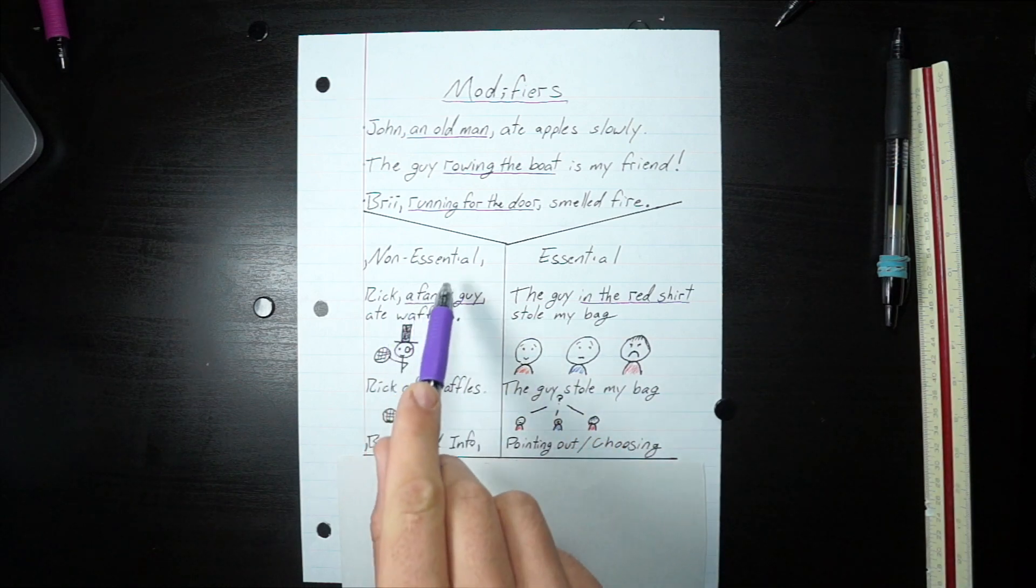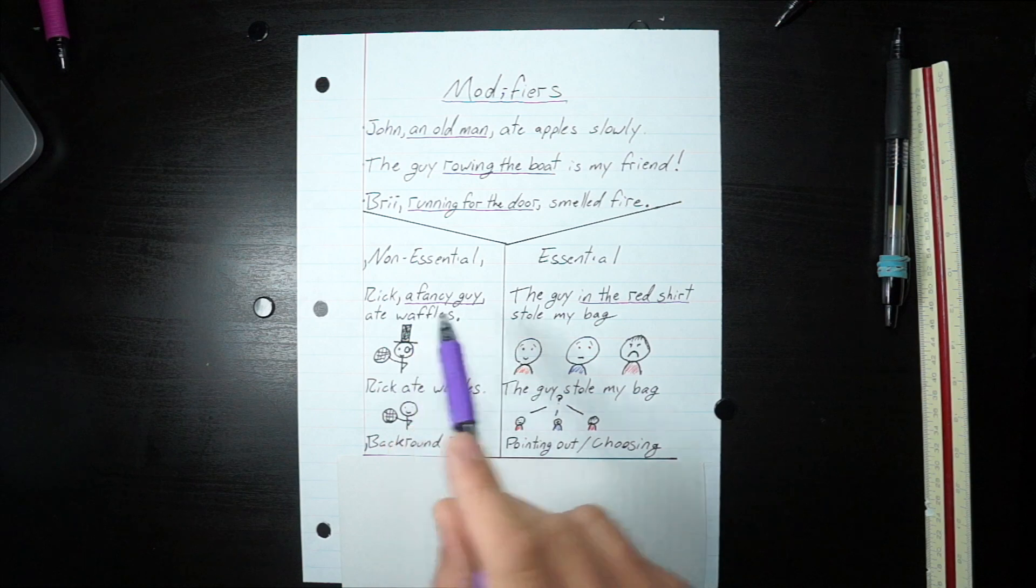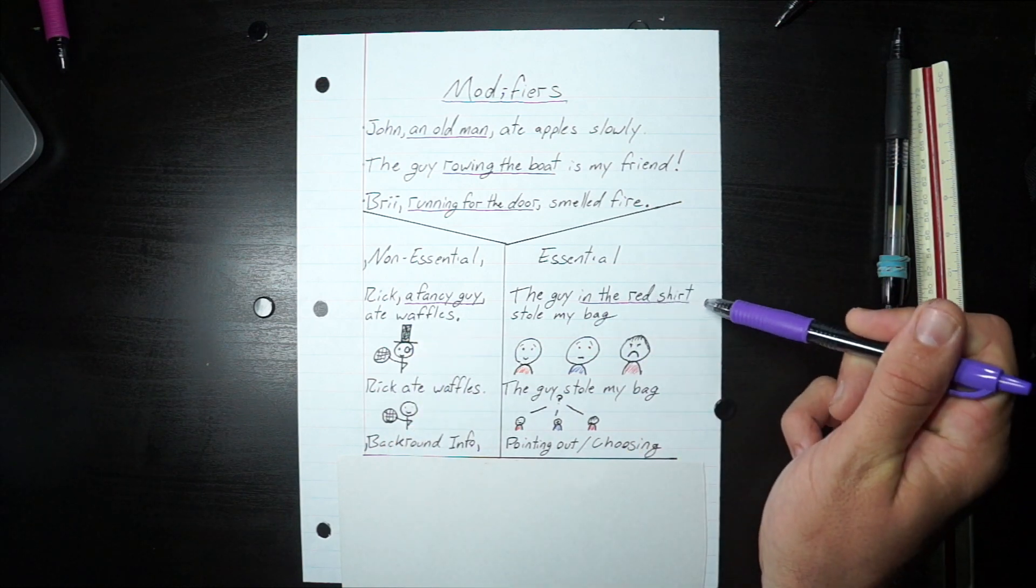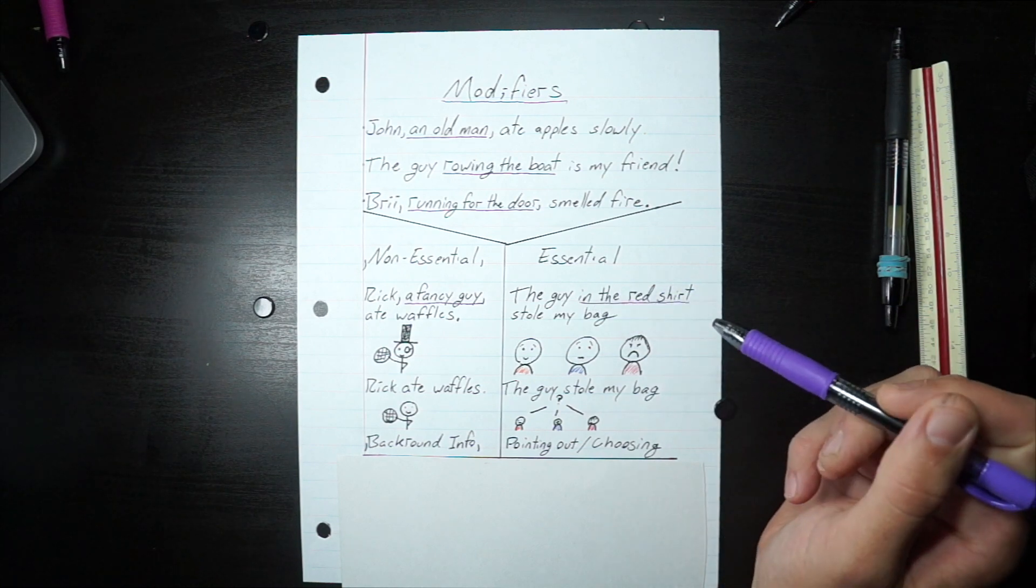If it's non-essential, you can take it out of the sentence and it still makes sense, put commas around it. If it's essential, you cannot take it out of the sentence or else it changes everything. So you do not put commas around it.